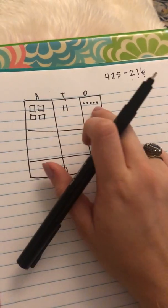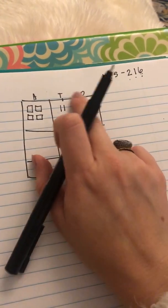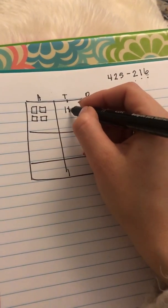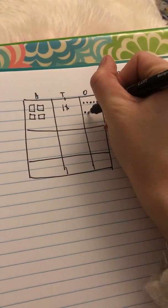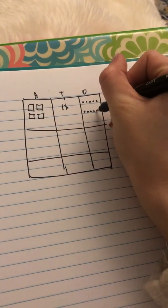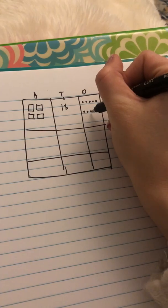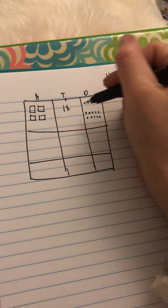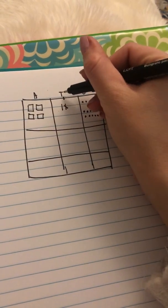So in order to make this problem work out, I'm going to have to go into the next place value, and I'm going to have to take one of these away, and then I'm going to have to draw it over here. So one, two, three, four, five, six, seven, eight, nine, ten, because this is representative of 110.